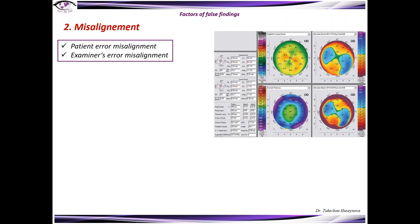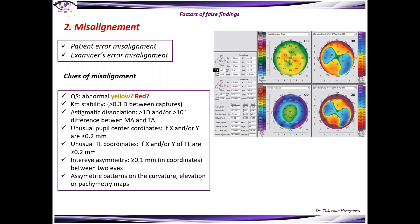Misalignment. There are patient error misalignment and examiner's error misalignment. Signs of misalignment: abnormal yellow or red, because normally it should be signed as OK. Keratometry stability - more than 0.3 diopters between captures is a sign of misalignment.